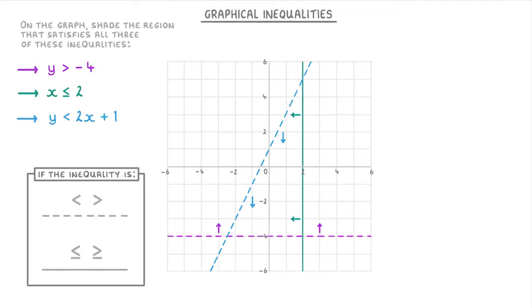Then to finish the question we just need to shade the region that satisfies all the inequalities. So that means the region that's above our purple line, but to the left of our turquoise line, and also below the blue line, leaving us with just this little region in the middle as our answer. And this is how it normally works: you'll end up with a little area in the middle in between all the lines you've drawn, so it's normally pretty easy to spot.